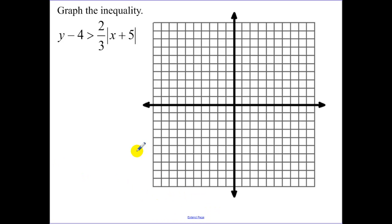Our next example, now we're graphing an absolute value. Put this into our standard form. Remember our standard form is x, so we want to add the 4 over to the other side. So now we have x minus a negative 5. So I go over 5, and I go up 4. That's my vertex.